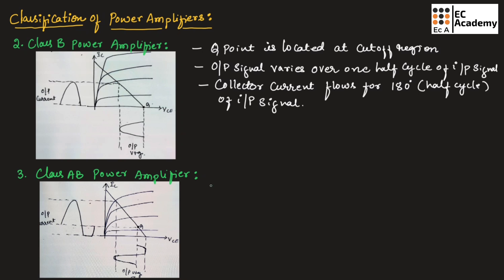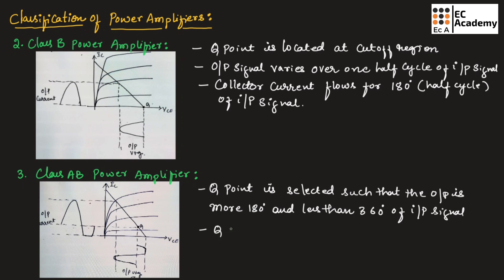In class AB power amplifier, the Q point is selected in such a way that the output is more than 180 degrees and less than 360 degrees, as shown in the figure.